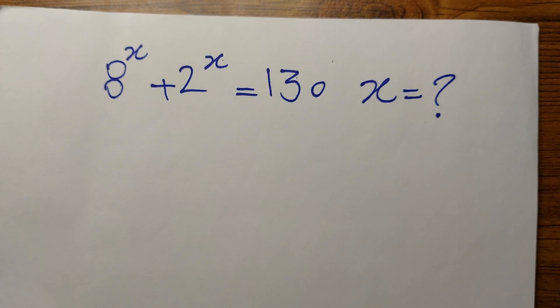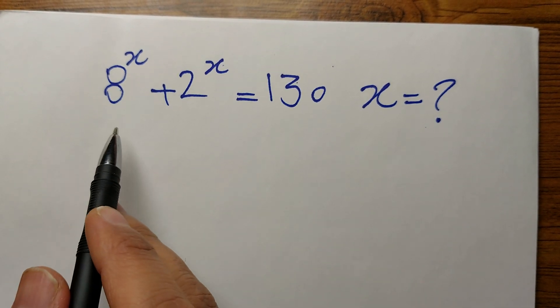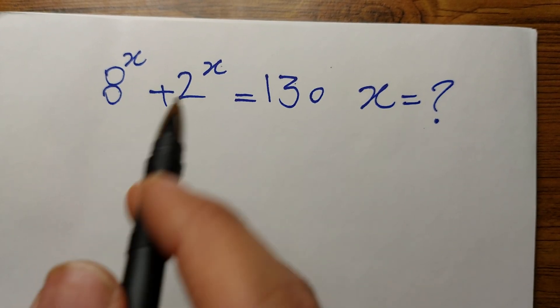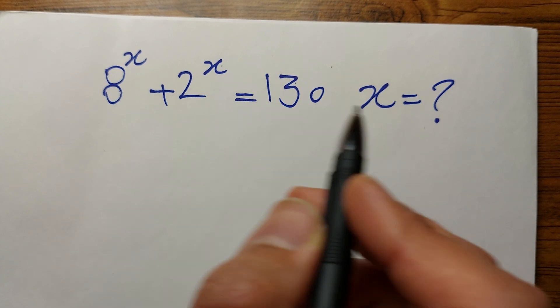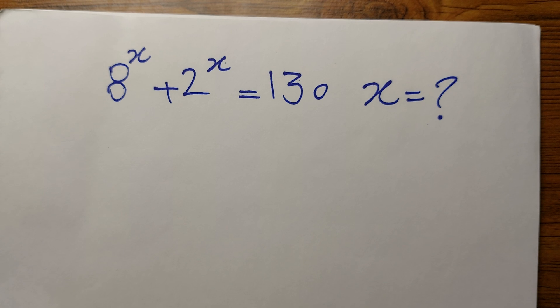The problem, the equation that you can see for today is from the Math Olympiad. Here we have 8 to the power of x plus 2 to the power of x equals 130, and we need to find x. So let's start now.